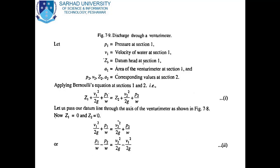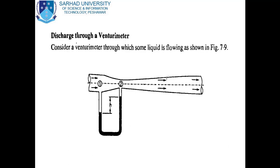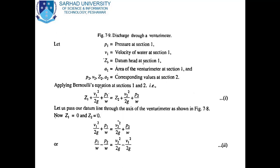Apply Bernoulli's equation at sections 1 and 2: z1 + v1²/2g + p1/ω = z2 + v2²/2g + p2/ω. Taking the datum line through the axis of the Venturimeter as shown in figure 7.8, z1 and z2 are both equal to zero. Equation 1 then reduces to: v1²/2g + p1/ω = v2²/2g + p2/ω.